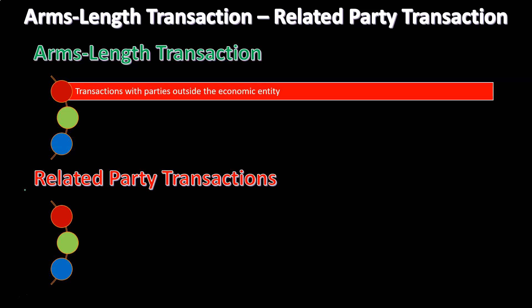Whereas if the parent sold the same property to a third party, then of course we would say the two people are self-interested, they must have negotiated what would be a market price. So an arm's length transaction is what we typically want to see in accounting, and when we don't see it, then we're going to have to think about what we're going to do about that.